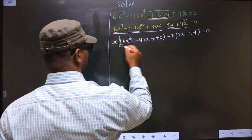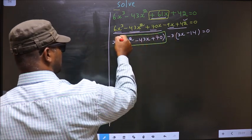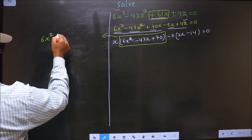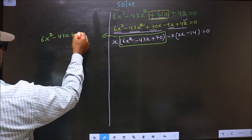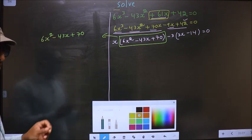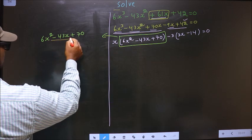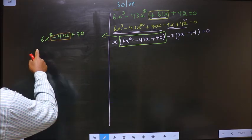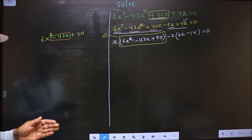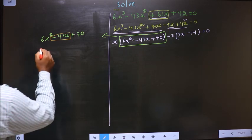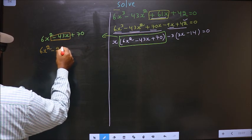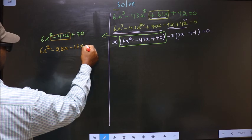Now I got a quadratic. I will factorize this quadratic: 6x² minus 43x plus 70. To factorize this we should change the middle term, that is minus 43x. 6 into 70 is 420. 28 into 15 is 420. 28 plus 15 is 43. So now in place of minus 43x, I write minus 28x minus 15x plus 70.